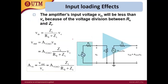The loading effect occurs due to the internal resistance of the source, so the amplifier input voltage Vin will be less than Vs because of the voltage division between Rs and Zi. Make sure you can differentiate between Vin and Vs: Vs is the supply voltage parameter, while Vin is the actual voltage being applied to the amplifier.